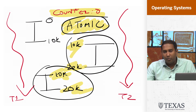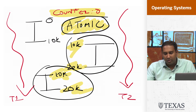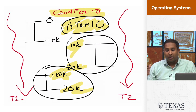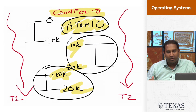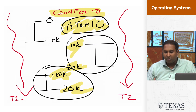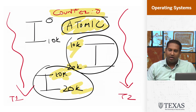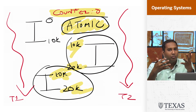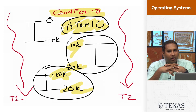In the next segment, we're going to look at some primitives that are used to achieve atomic operations.